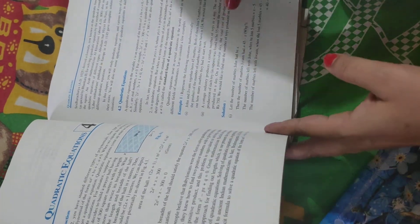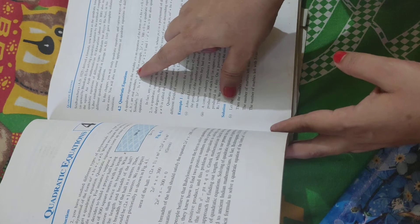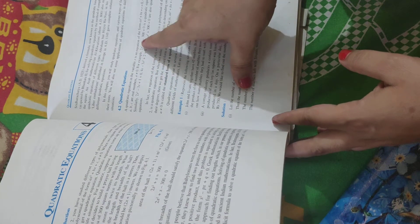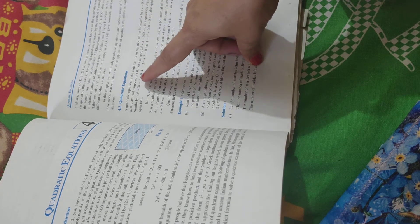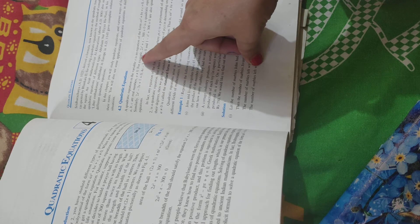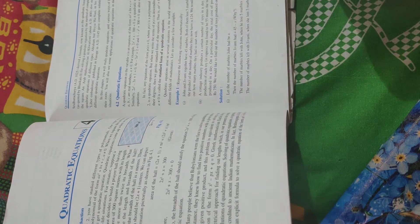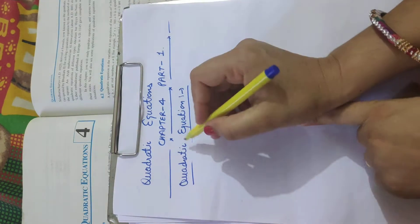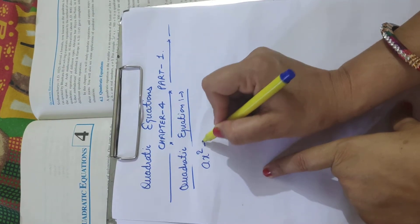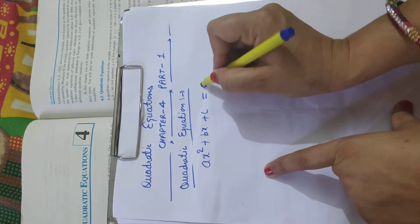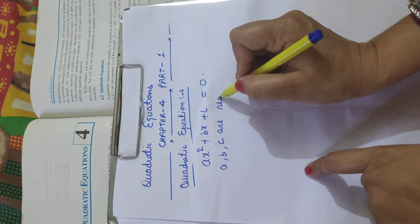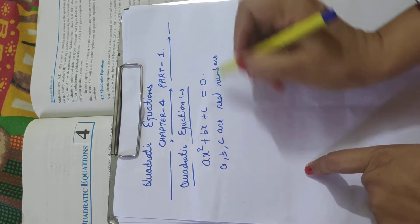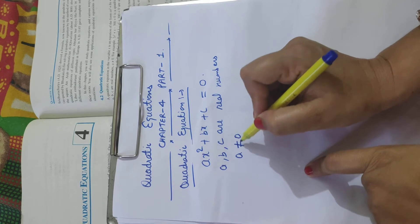First of all, I want to discuss the quadratic equation. A quadratic equation in a variable x is an equation of the form ax squared plus bx plus c equals 0, where a, b, and c are real numbers and a is not equal to 0. The general form of this equation is ax squared plus bx plus c equals 0, where a, b, and c are real numbers and a is not equal to 0.